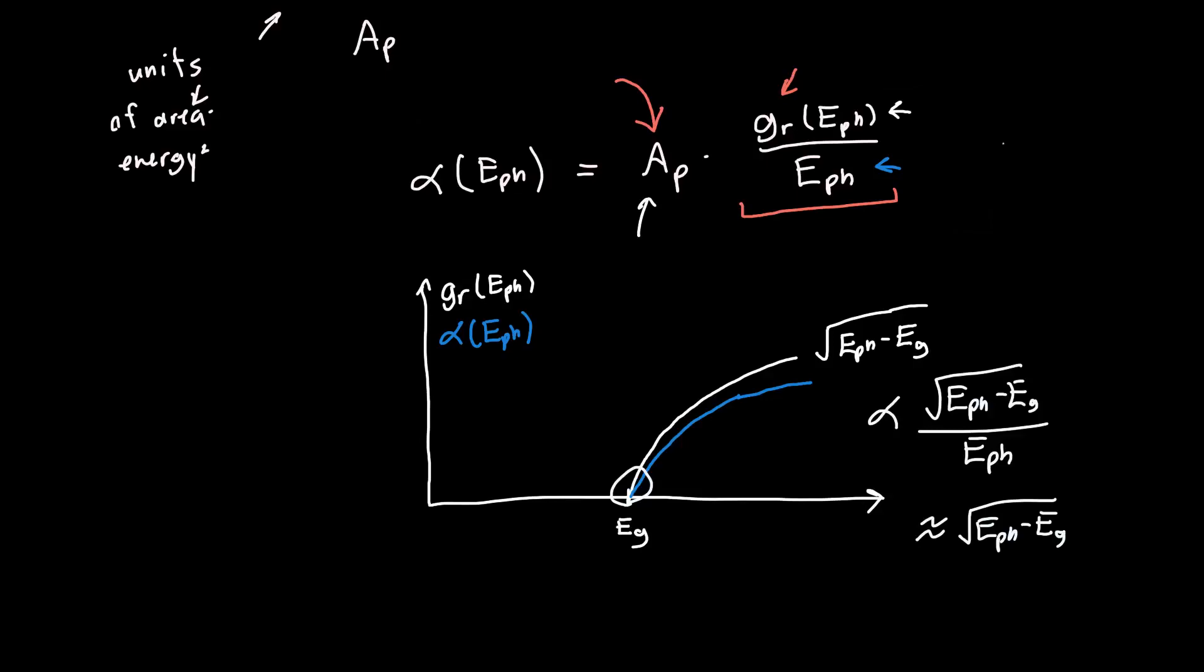You might be thinking, wait, shouldn't it just be one over the square root of E photon? But no, because we've got an offset in this square root. So this denominator is actually, in some ways, less important than the square root in the numerator, at least very close to the band gap.